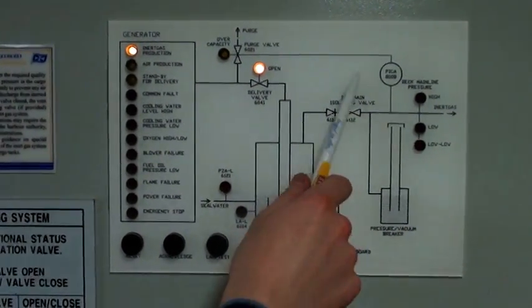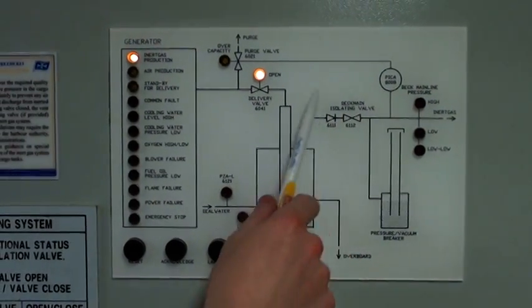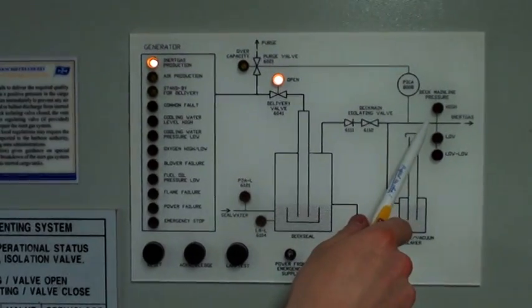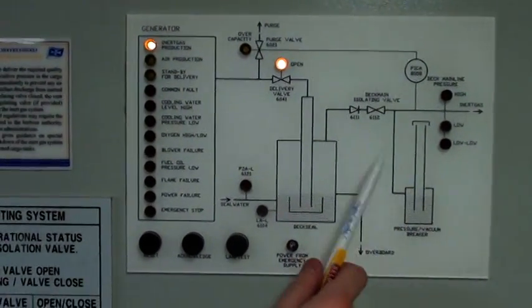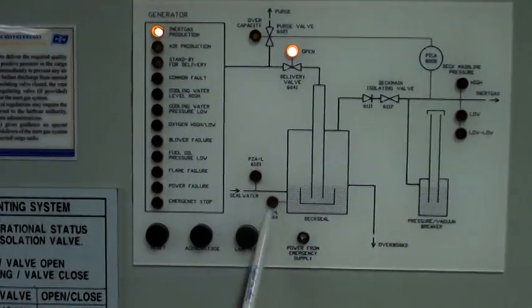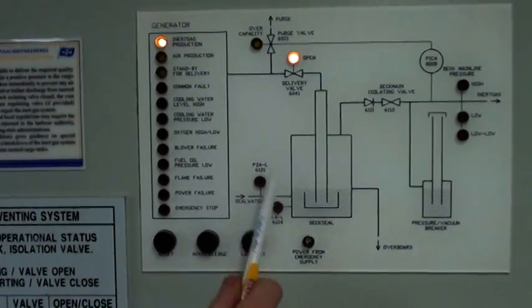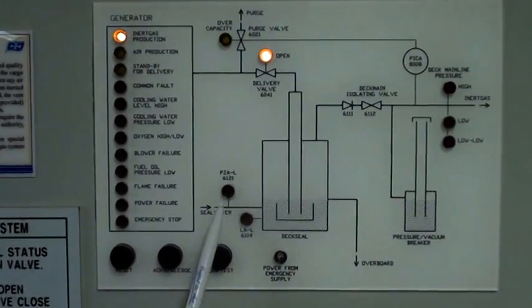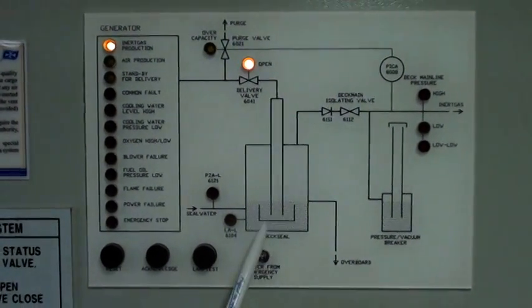It goes through the deck main isolation valve and the non-return valve, going to the inert gas main and also to the PV breaker. Here on the deck seal you also have the two alarms of low pressure on the pump and low level in the deck seal.